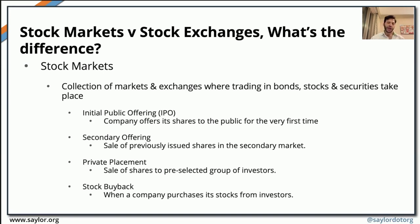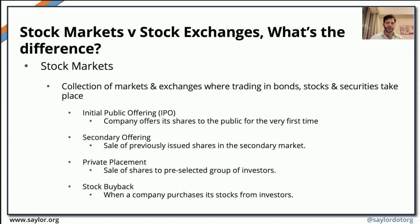If we want to issue or trade stocks, there are primary markets and secondary markets. In terms of equity financing options, the first is through an initial public offering, or IPO. This is when a company decides to issue stocks for the very first time and sell these shares to the general public — anyone can subscribe. The buyers are essentially the first owners of the newly issued shares of that particular company.